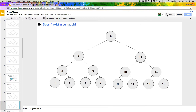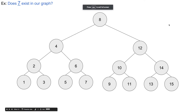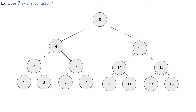So we're going to go ahead with the example: does 7 exist in our graph? We're always going to start at the root node of 8 and look for 7. This graph happens to be sorted, but we're going to pretend we don't know that and just do a search as if we don't know how the data is organized. A DFS is called a depth first search because it goes as deep as possible and then backtracks and continues to go as deep as possible every time it can — that's where it gets the name.